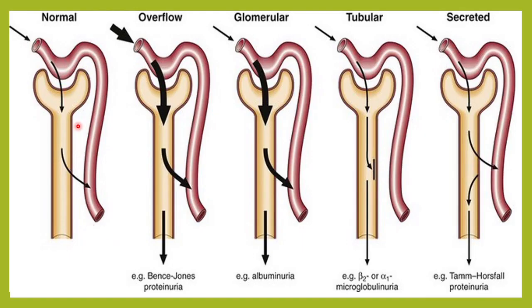This is the normal nephron. Here you will see there is an overflow of proteins. Here there is damage to the kidney glomerulus and that is why there is albuminuria. Then there is a tubular problem because of some tubular interstitial disease, hence low molecular weight proteins are excreted. And secretory proteinuria — here excess of tissue proteins can be secreted in the urine.